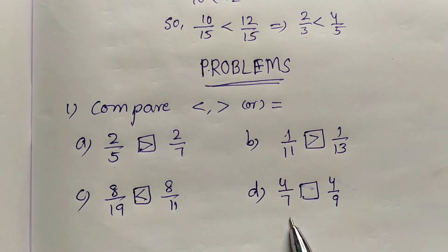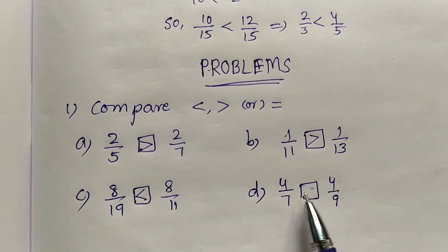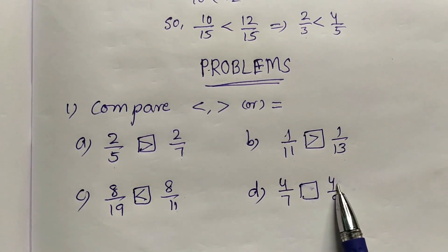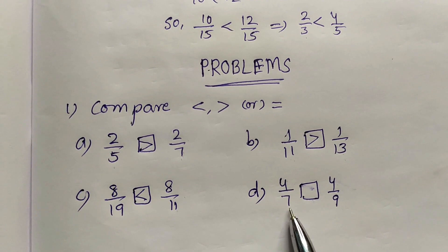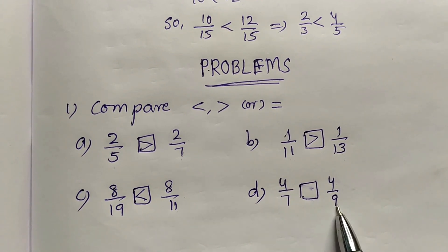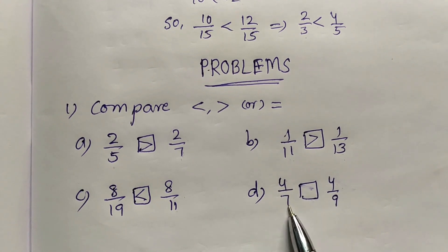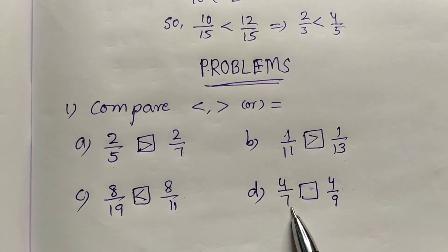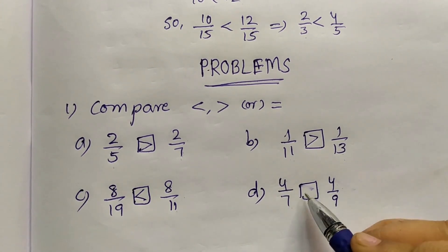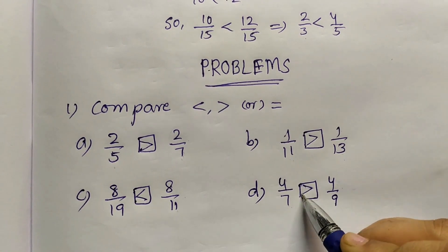Next: 4 by 7 and 4 by 9. Numerators are the same. Compare the denominators — 9 is the greater one. So 4 by 9 is the smaller fraction, and 4 by 7 is the greater fraction. So 4 by 7 is greater than 4 by 9.